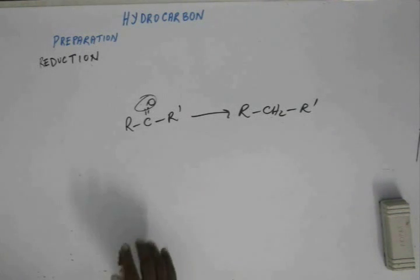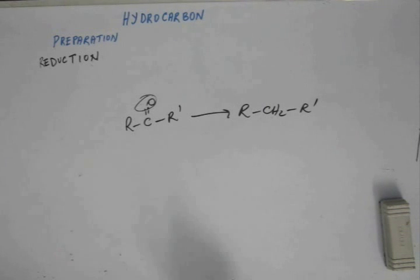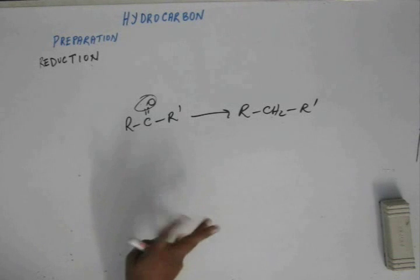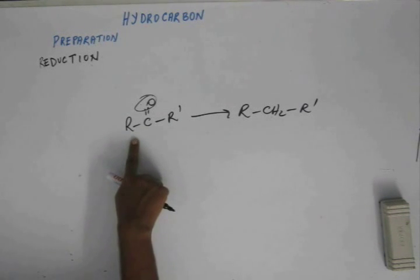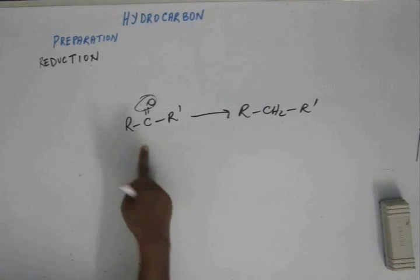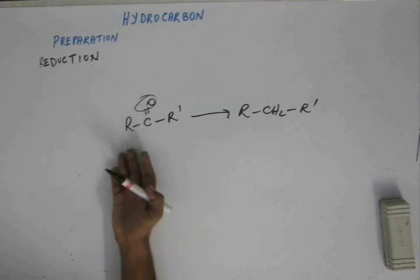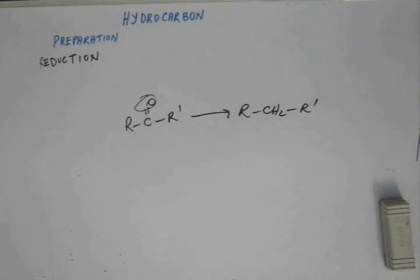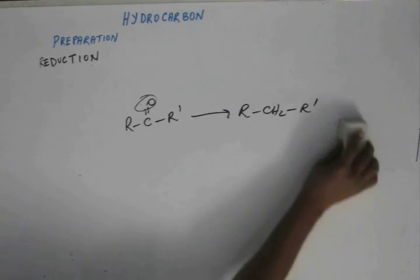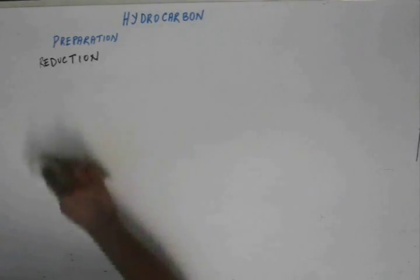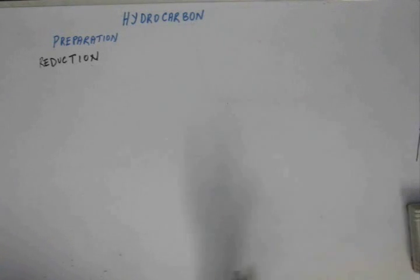So we can consider this as a method of preparation of alkane, but it will be more appropriate to consider this as a reaction of ketone. So there will be other many reactions in which hydrocarbon would be produced, but I am not teaching it because the right place would be to teach this reaction. The right place would be the chapter aldehydes and ketones, carbonyl compounds. So we will study there as this as a reaction of carbonyl compound. So unnecessarily I am not putting it here. Let it come at a proper place.